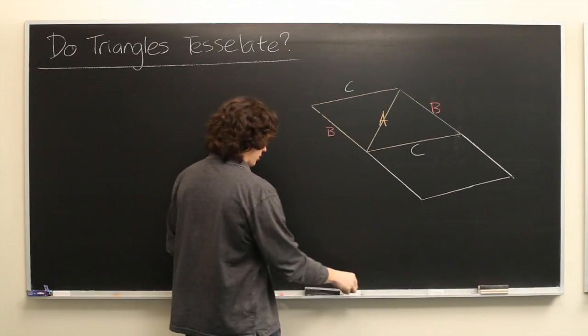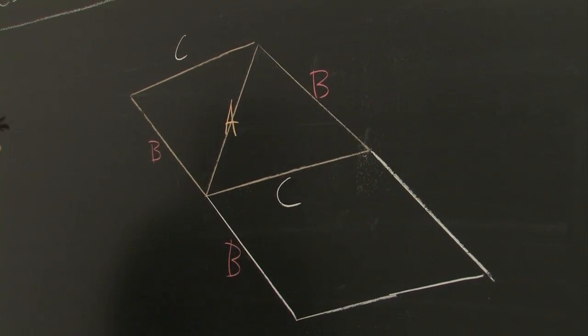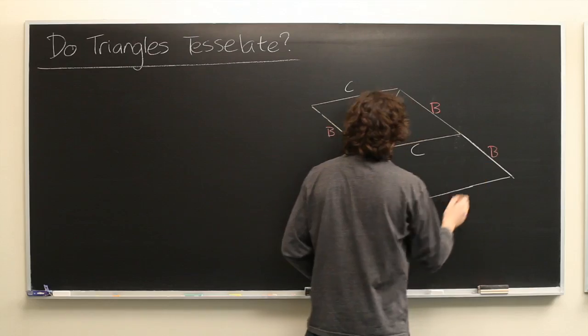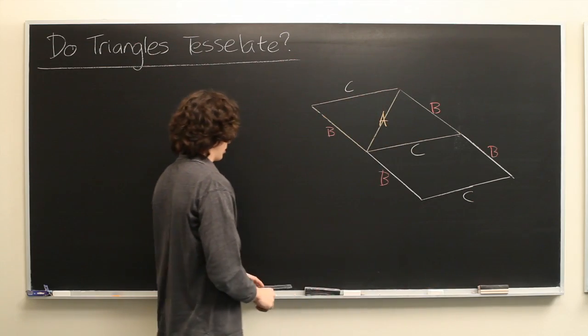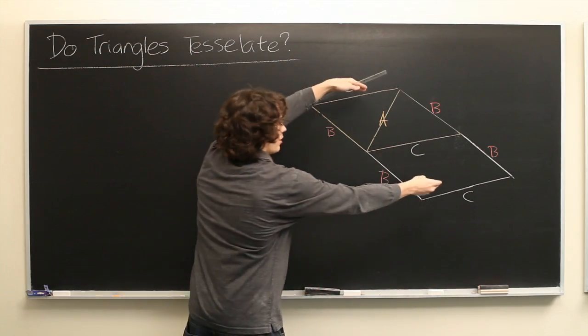Well, this is just the same thing. We've got B and B, and another instance of C down here. And then we can also tessellate this way as well.